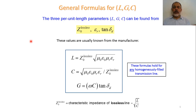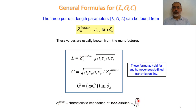Based on the previous analysis for lossless and lossy transmission lines, we conclude that we have three per-unit-length parameters: inductance L, conductance G, and capacitance C per unit length. These can be found using the characteristic impedance of the lossless transmission line. The inductance per unit length is obtained as the characteristic impedance Z₀ of the lossless transmission line — defined as the square root of L over C — multiplied by the square root of μ₀ε₀ε_r.